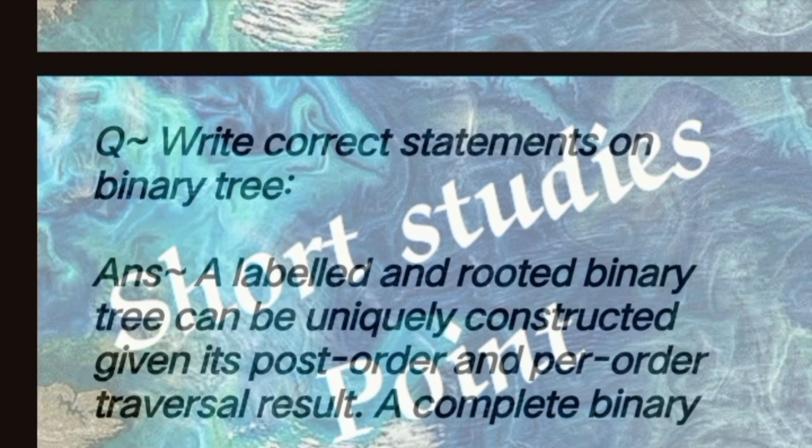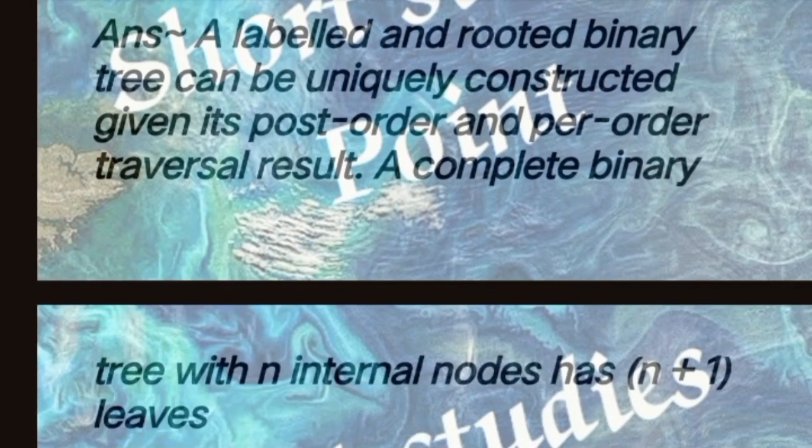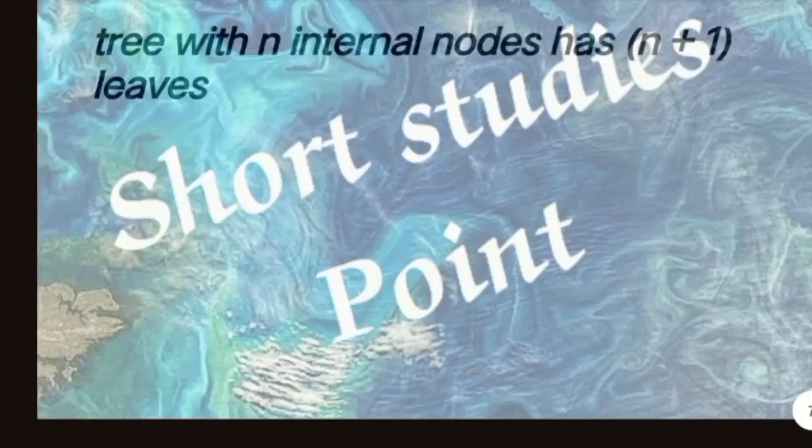Next question: Write the correct statement on binary trees. Answer: A leveled and rooted binary tree can be uniquely constructed given its post-order and pre-order traversal results. A complete binary tree with n internal nodes has n plus one leaves.